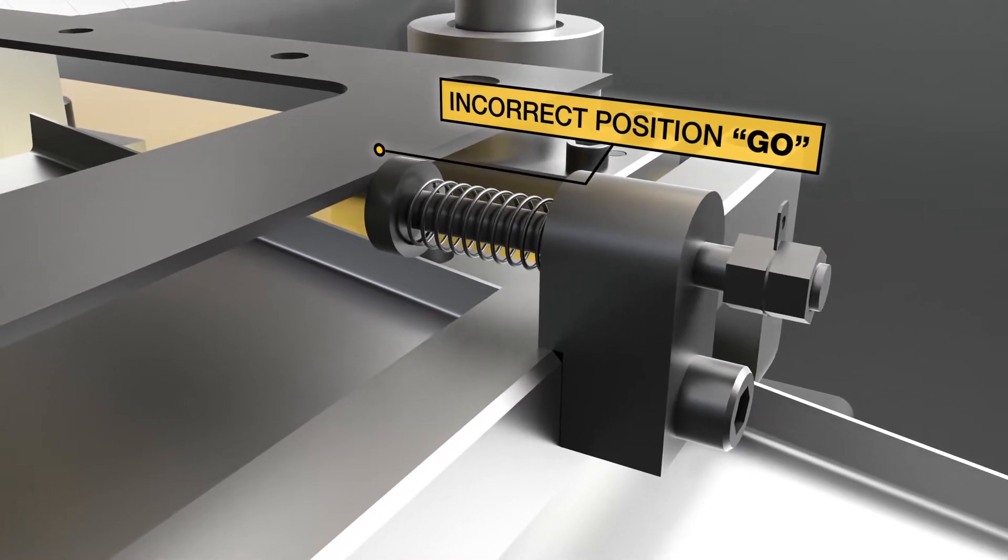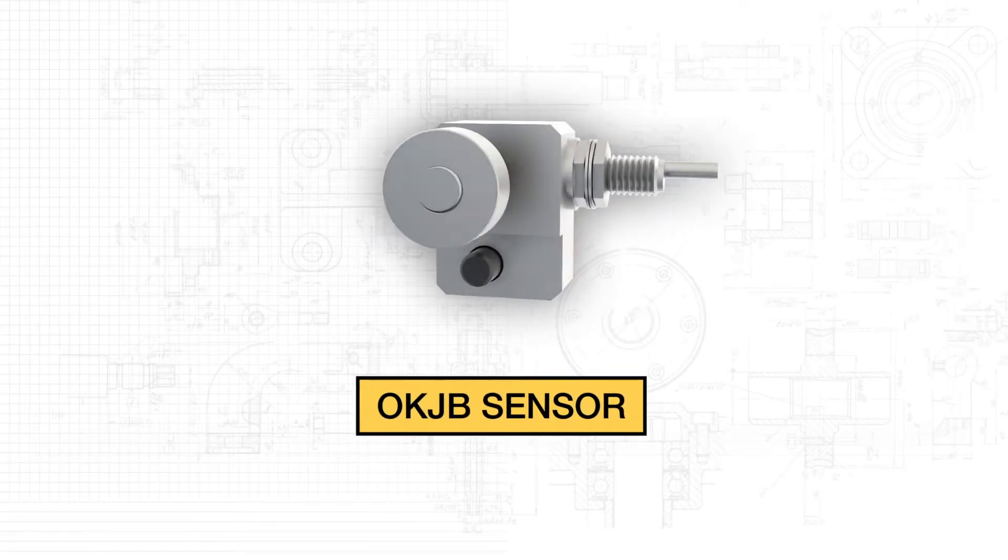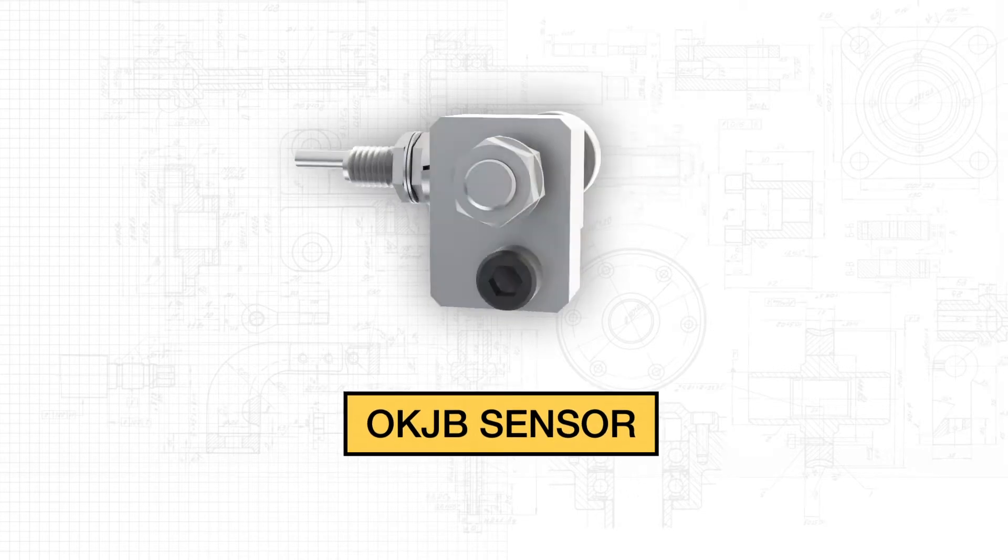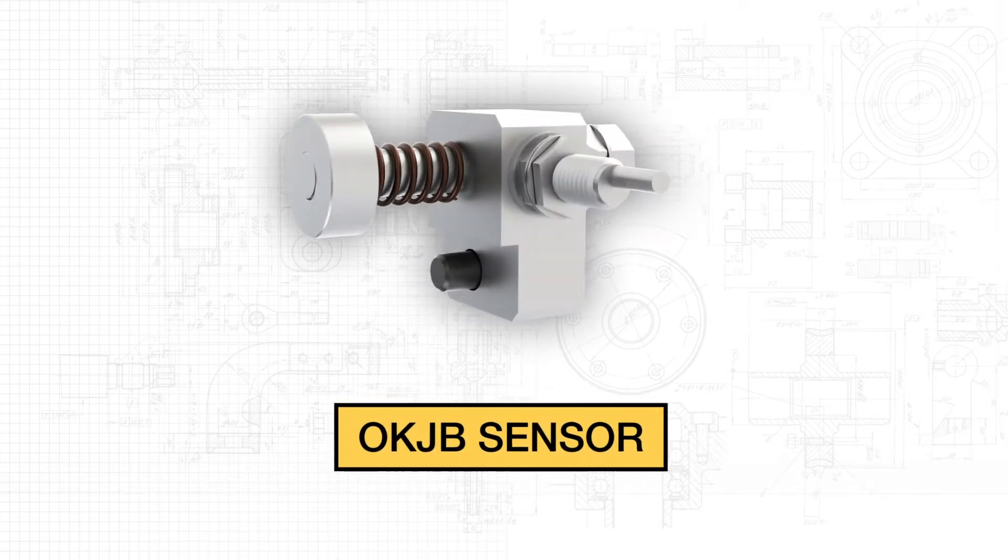The second and best alternative is the Misumi OKJB sensor. This design is made of 4140 steel to prevent body breakage and a proximity switch.